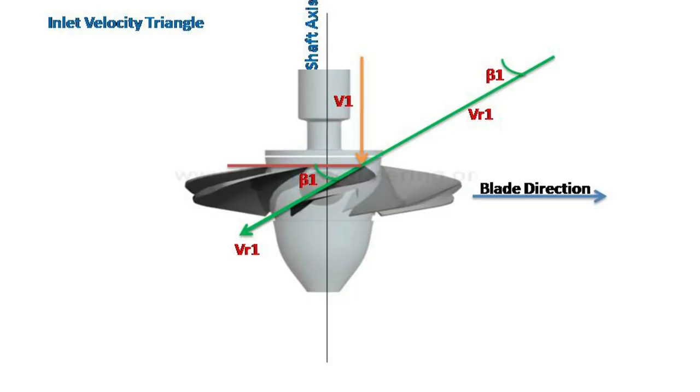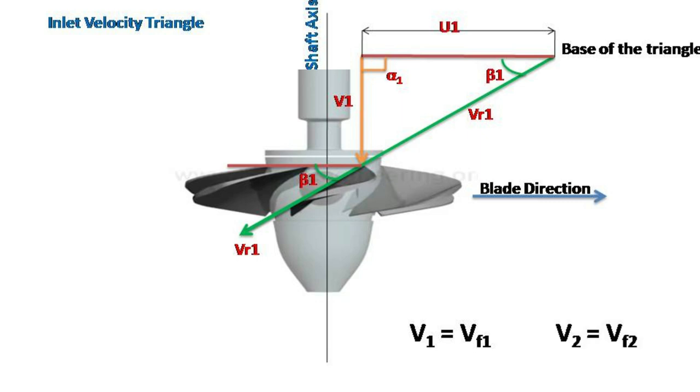In axial flow turbines, tangential component of velocity is absent as there is no chance of branching of velocity in the flow direction. Hence at inlet, absolute velocity v1 will be equal to flow velocity vf1 in axial direction. And at the outlet, velocity v2 will be equal to flow velocity vf2. Inlet and outlet angles alpha1 and alpha2 will be 90 degrees.